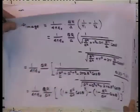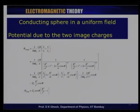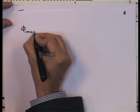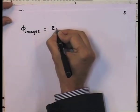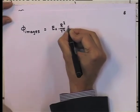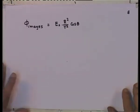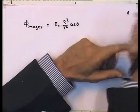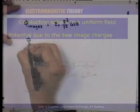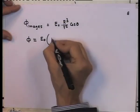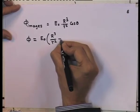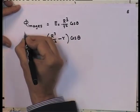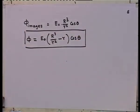The total potential is the sum: E₀(R³/r²)cosθ + (−E₀r cosθ) = E₀(R³/r² − r)cosθ. If you go back and look at what we did earlier using Legendre polynomial expansion, this is precisely the expression we had for a conducting sphere in a uniform electric field.